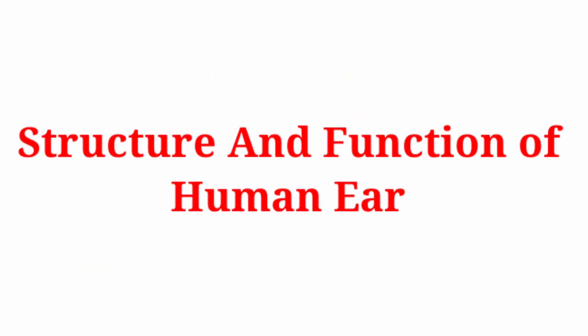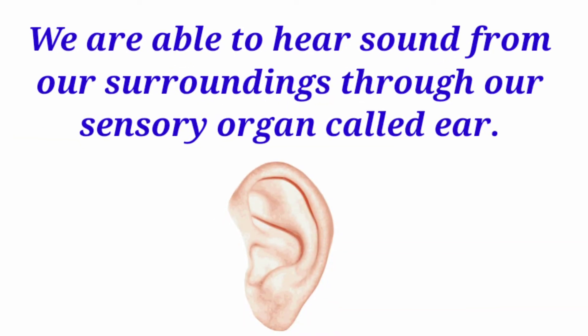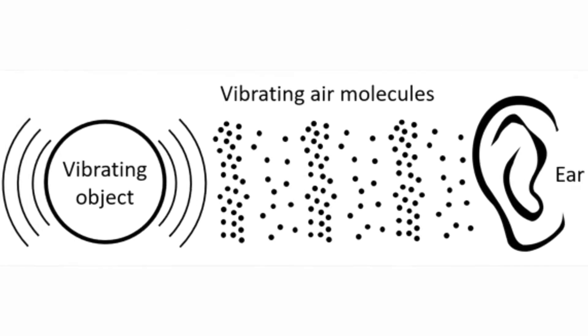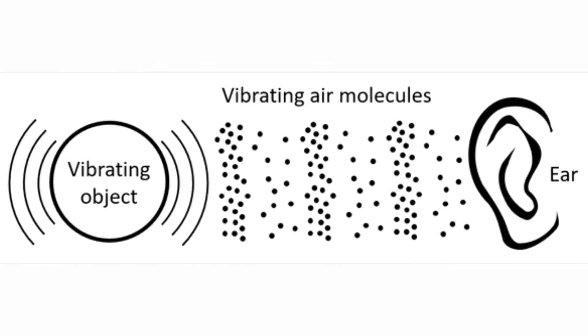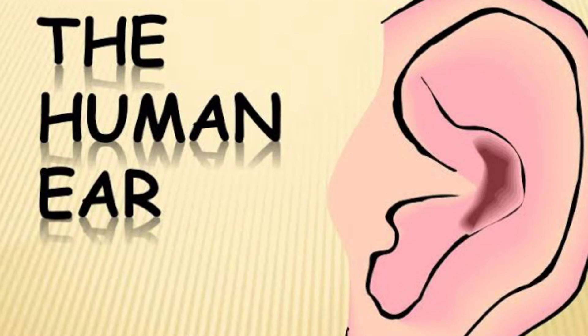In this video we discuss the structure and working function of the human ear. We are able to hear sound from our surroundings through the sensory organ called the ear. Sound is produced by a vibrating body and needs a medium for its propagation. When sound propagating through air reaches our ears, we are able to hear it.